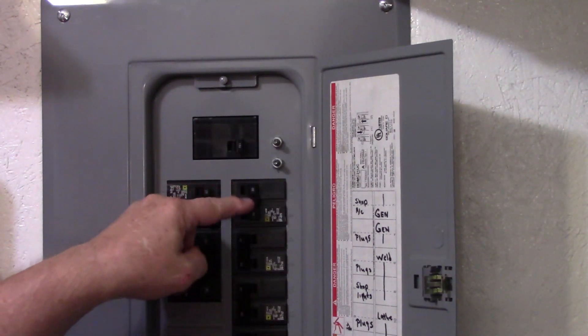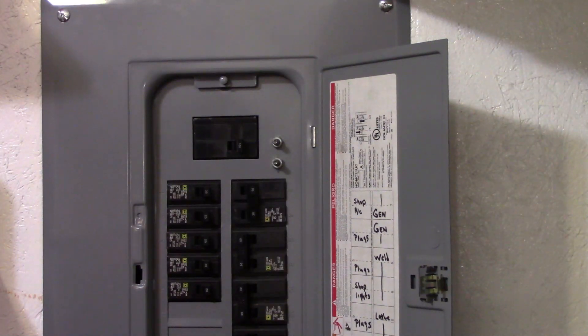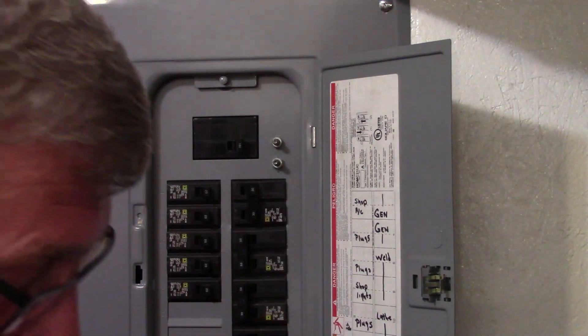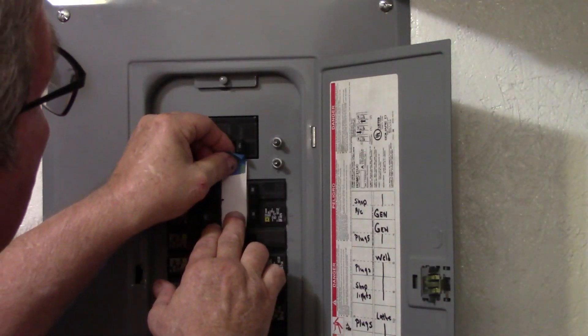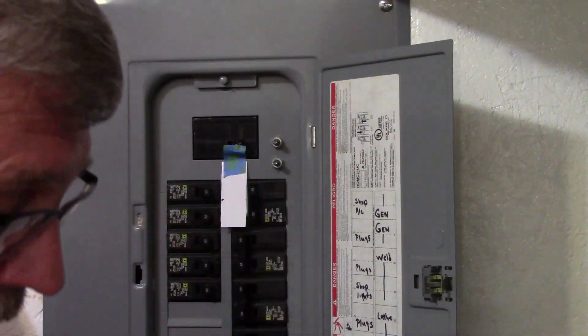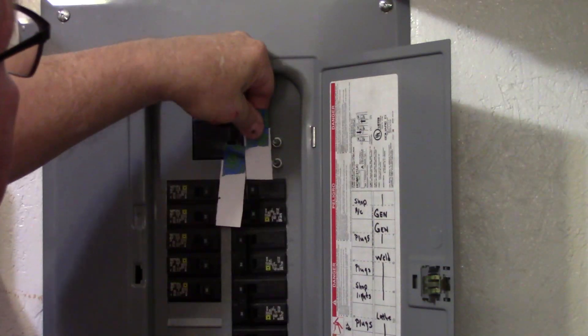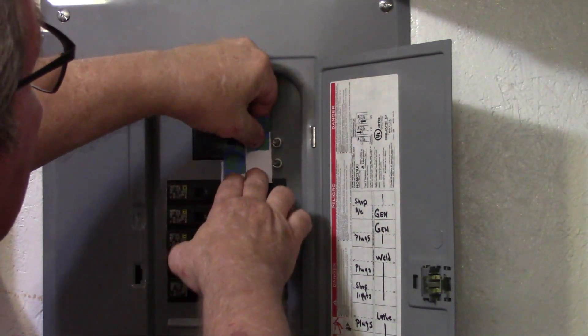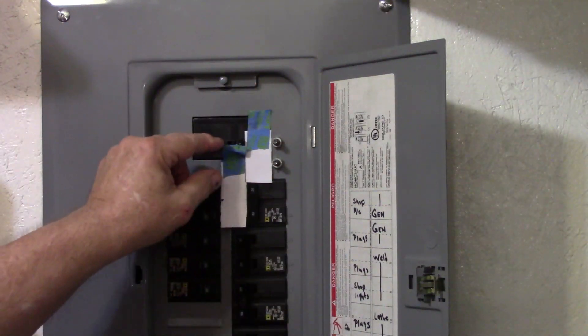Right now everything is on except this breaker. So what I'll do is I'll start off and tape it kind of right there, and I'll tape my next piece and tape it right about there.